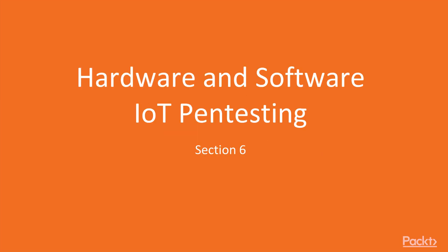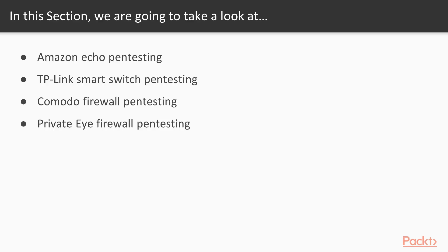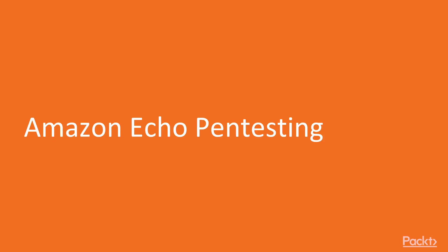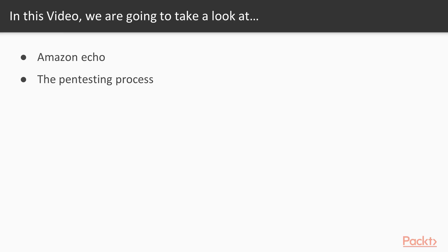Welcome to Section 6 of the course: Hardware and Software IoT Pen Testing. In this section we are going to look at various topics: first, Amazon Echo pen testing; then TP-Link smart switch pen testing; then how to perform pen testing using Komodo firewall; and finally how to perform pen testing using Private Eye firewall.